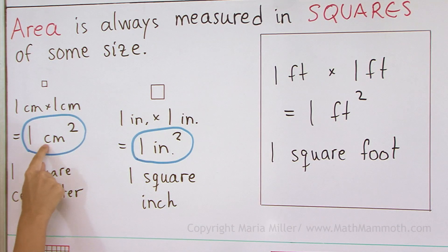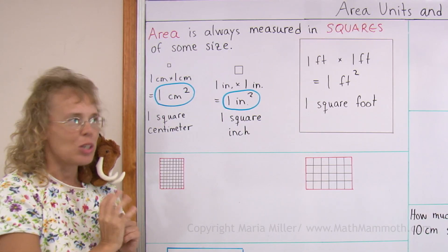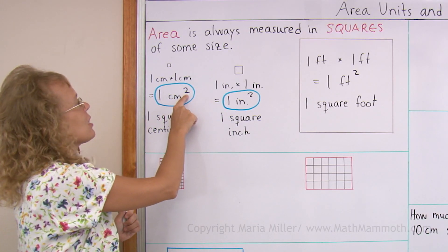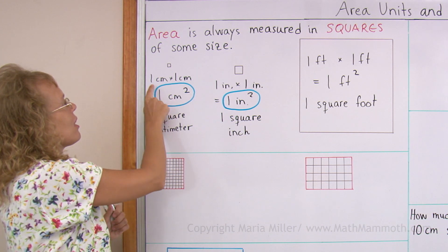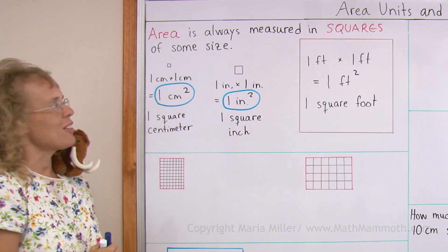Look how it is written. We have cm meaning centimeter, and then this elevated number 2 meaning the squaring. The 2 comes from the idea of multiplying the centimeter by itself.